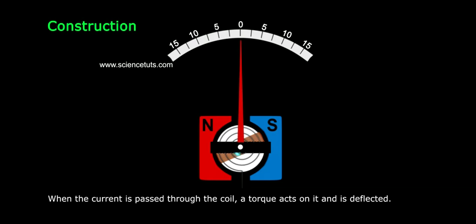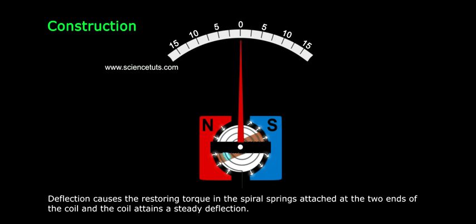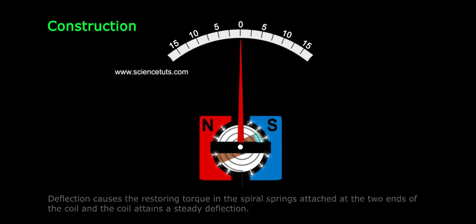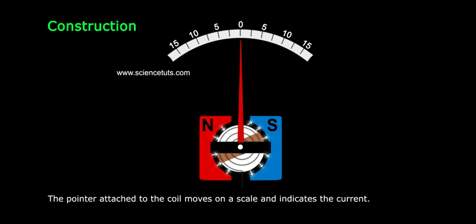When current is passed through the coil, a torque acts on it and it is deflected. This deflection causes the restoring torque in the spiral springs attached at the two ends of the coil and the coil attains a steady deflection. The pointer attached to the coil moves on a scale and indicates the current.